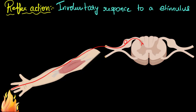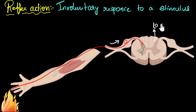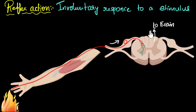What happens after that? That signal is taken by another neuron over here in the spinal cord. And then that signal goes to the brain — the neuron sends that signal to the brain. And this is what happens all the time; there's nothing different here. But what's different in a reflex action? It will not wait for the brain to give a command.